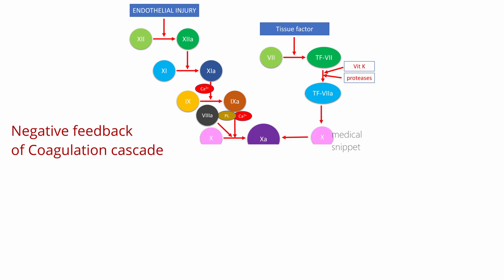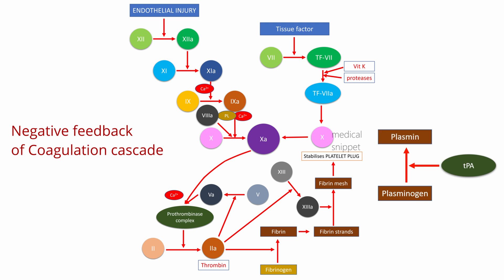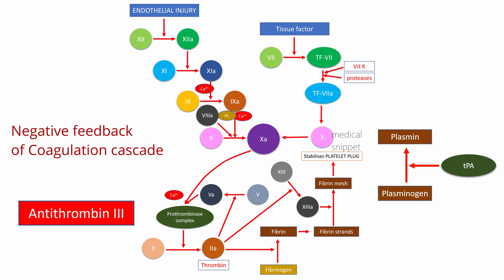There are several negative feedback mechanisms to prevent overcoagulation. First is tissue plasminogen activator, secreted by the endothelial cells. It activates plasminogen to plasmin. The plasmin acts directly on the fibrin mesh and breaks it down, thus lysing the clot. Second is antithrombin III, which is produced in the liver and inactivates mainly factor Xa and thrombin, thus inhibiting the coagulation pathway.